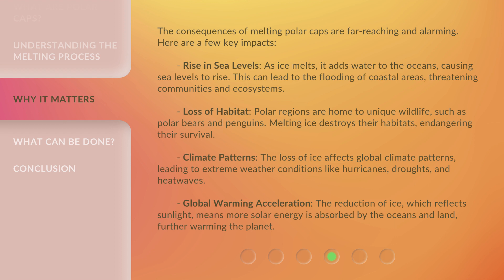Climate patterns: the loss of ice affects global climate patterns, leading to extreme weather conditions like hurricanes, droughts, and heat waves. Global warming acceleration: the reduction of ice, which reflects sunlight, means more solar energy is absorbed by the oceans and land, further warming the planet.